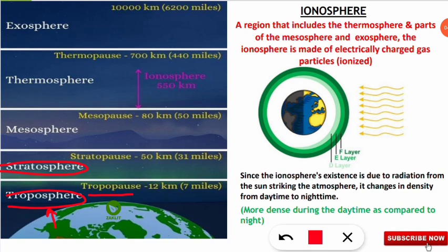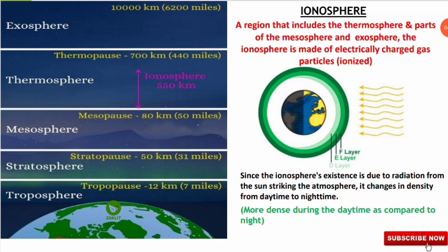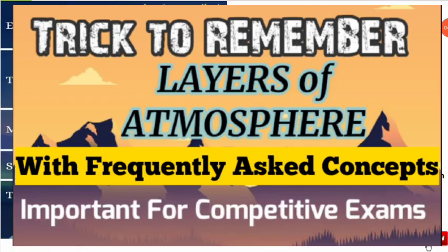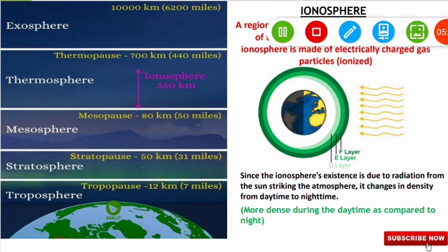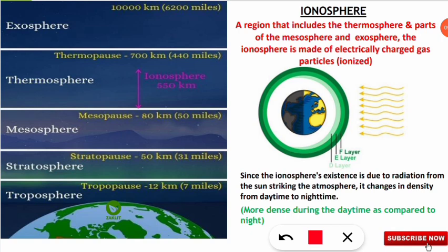The tropopause is 12 kilometers above Earth's surface (about 7 miles). Moving from stratosphere to mesosphere, there is a layer called stratopause; from mesosphere to thermosphere there is the mesopause; and between thermosphere and exosphere there is the thermopause. I have made a video on how to remember atmospheric layers with a trick — check the I button. A question will surely come from atmospheric layers.